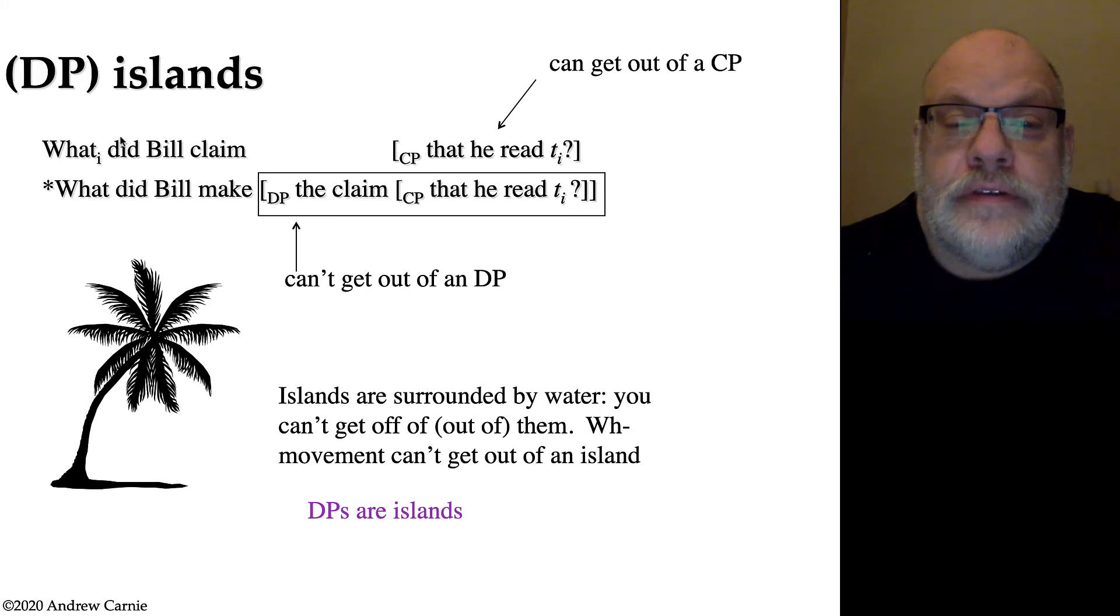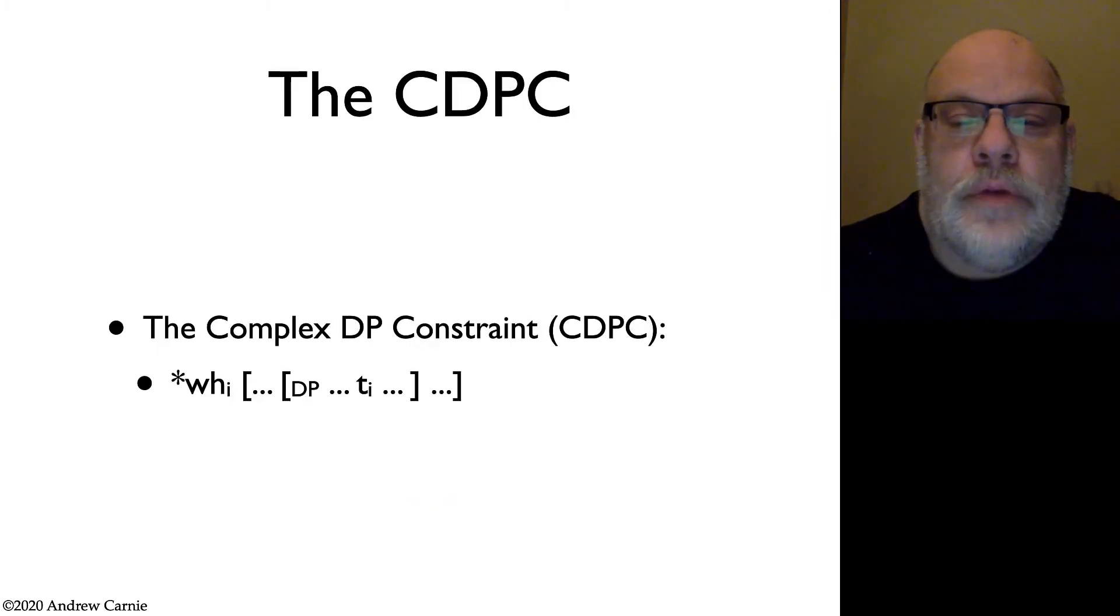So DPs are like a tropical island. No WH movement can get outside of this structure. You can do WH movement within the structure, but not out of the structure. By contrast, in this first sentence, the CP is not embedded inside of a DP. So you can do WH movement, and that's grammatical. That's a DP island. We actually can state this as a constraint on the grammar, sometimes called the complex DP constraint, or sometimes the complex NP constraint, which effectively says if you have WH movement and it crosses over a DP bracket, then the sentence is going to be ungrammatical.